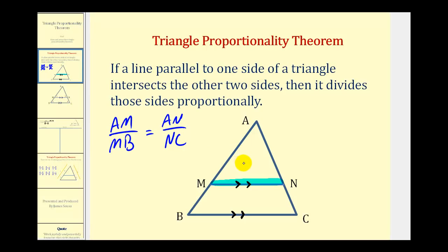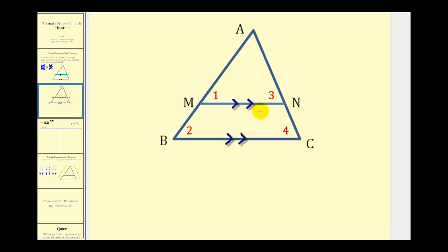Now we want to prove this theorem, but first let's talk strategy. Because these two lines are parallel, we know that angle one is congruent to angle two because they're corresponding angles, and the same for angle three and angle four. So by angle-angle similarity, this small triangle and this large triangle are similar, and therefore their corresponding sides are proportional.